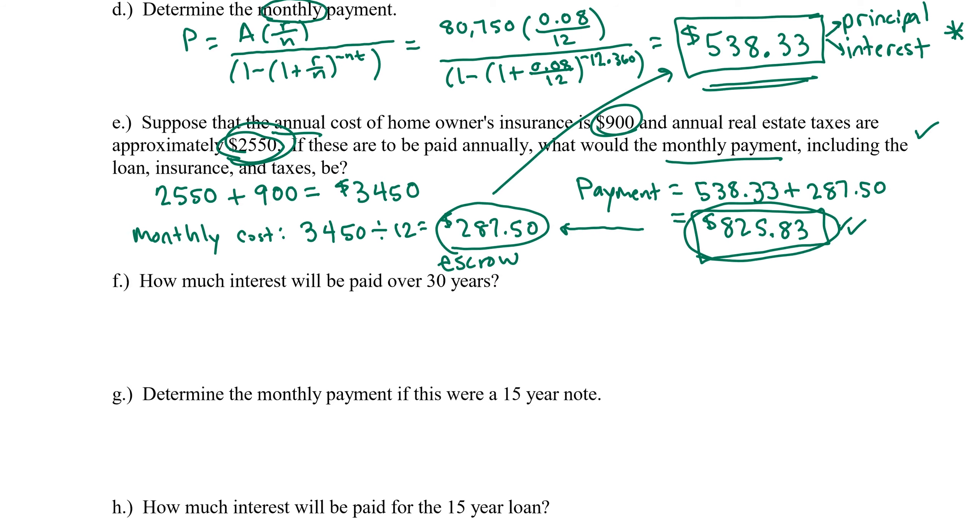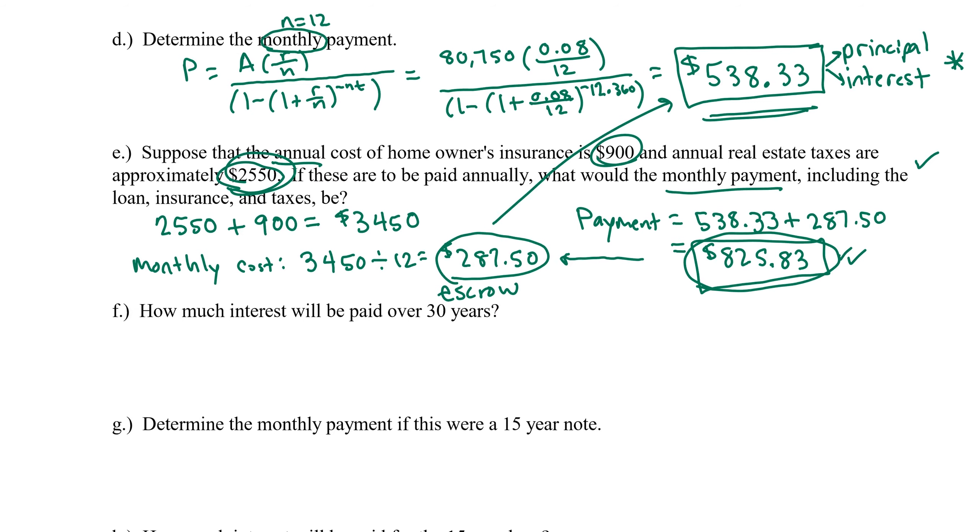Next question, how much interest will be paid over the 30 years? Now, remember the payment that came out of the formula is the part that covers principal and interest. So it's that that I'm going to use to calculate the interest paid over 30 years. So first of all, let's figure out what was the out-of-pocket expense over these 30 years for the loan. So we have been paying $538.33 12 times per year for 30 years.